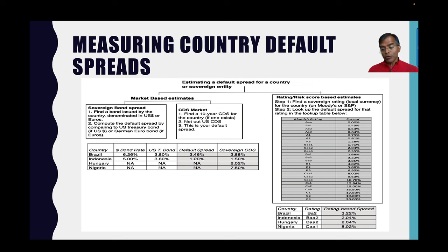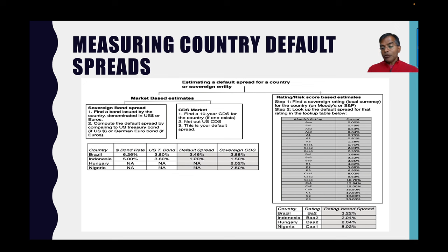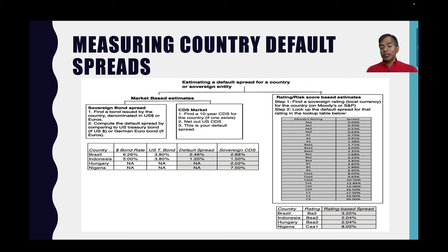Sovereign CDS spreads are now available for about 75 countries, but there are about 170 countries overall that I need equity risk premiums for. So my third approach completes the picture: if I can get a sovereign rating for a country — and there are about 150-plus countries with sovereign ratings — I can assign a default spread based on that rating. For instance, a BA2-rated country in July 2022 had a default spread of about 3.22%. I build this lookup table by matching government bonds and sovereign CDS spreads to ratings. Because I want comparable numbers for 160-plus countries, I use the ratings-based spread approach, taking the local currency sovereign rating for every country.